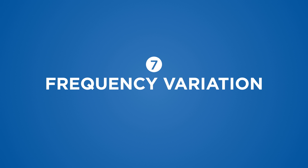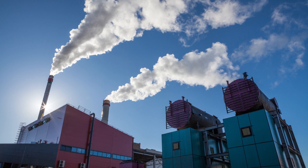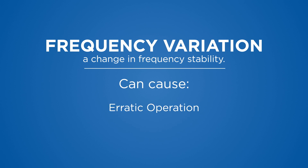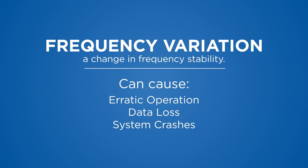Frequency variation is a change in frequency stability, resulting from generator or small co-generator sites being loaded or unloaded. Frequency variation can cause erratic operation, data loss, system crashes, and equipment damage.